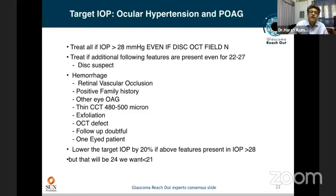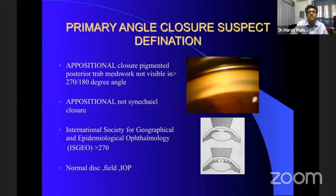In cases of ocular hypertension, yes you can observe, but if at any point the pressure is 28 mmHg or more, there is family history, CRVO, BRVO, thin corneas, the other eye is affected, OCT is doubtful, fields are doubtful, or it is a one-eyed patient — we have to be very careful not to observe those kinds of patients.